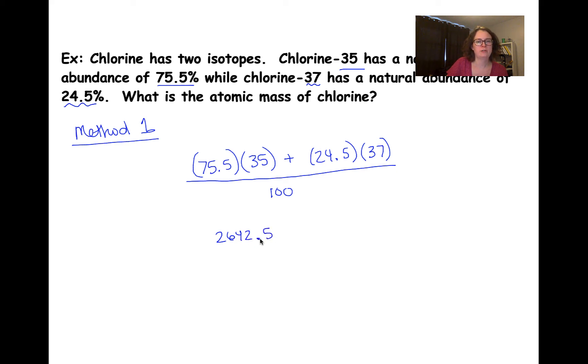2,642.5 plus 24.5 times 37 is 906.5, all over 100.